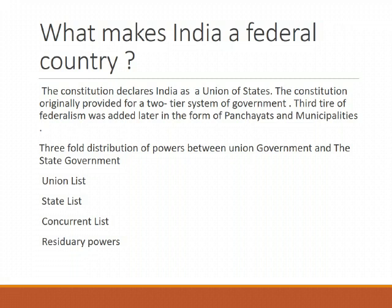The Constitution originally provided for a two-tier system of government: the Union Government, what we call Central Government, representing the Union of India, and the State Government. Later on, a third tier of Federalism was added in the form of Panchayats and Municipalities. As in any Federation, these different tiers enjoy separate jurisdiction.